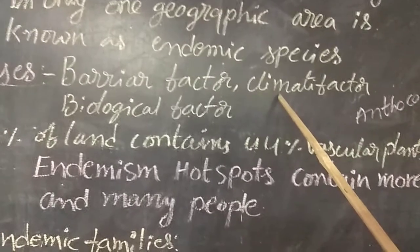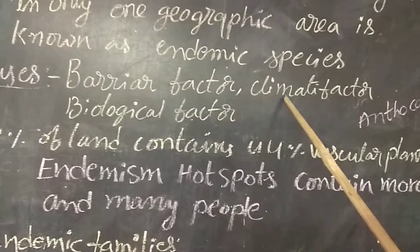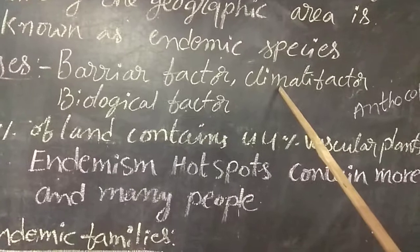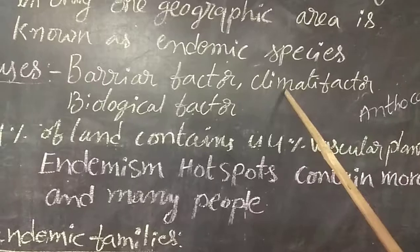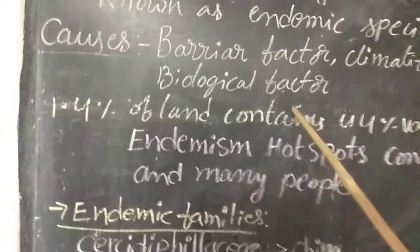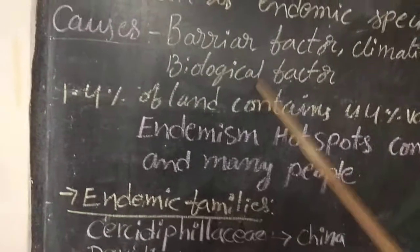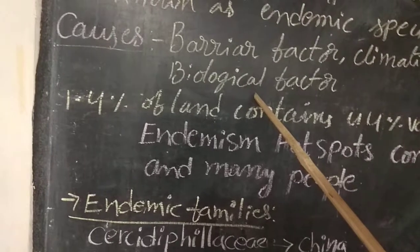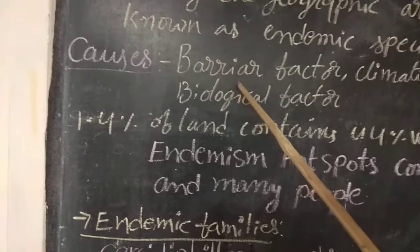Climatic factor: climate plays a crucial role in the growth and development of plant species — light, soil, temperature, humidity, and topography all play a crucial role in the growth, development, and distribution of plant species. Biological factors: plants influence the growth of other plants, and animals also influence the growth of plants. They promote the distribution of plant species either through pollination or seed dispersal. These are the causes of endemism.